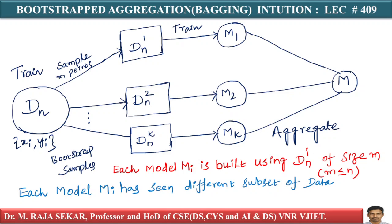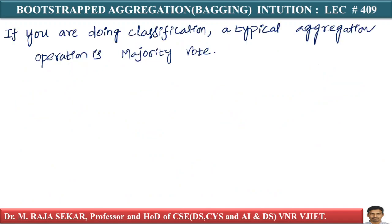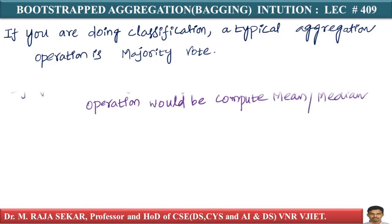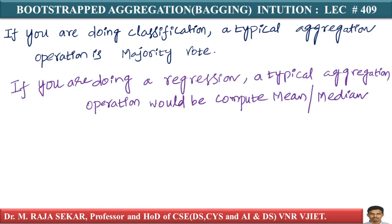A typical way to aggregate: suppose if you are doing classification, a typical aggregation operation is majority vote. On the other hand, if you are doing regression, a typical aggregation operation would be to compute mean or median.